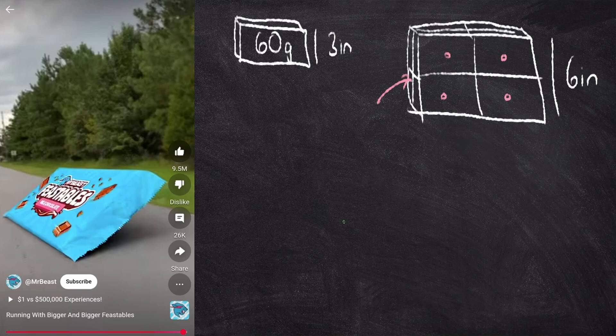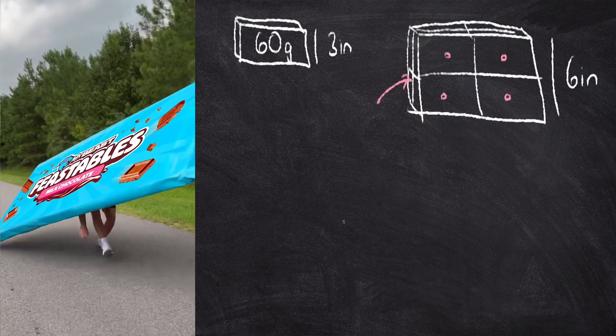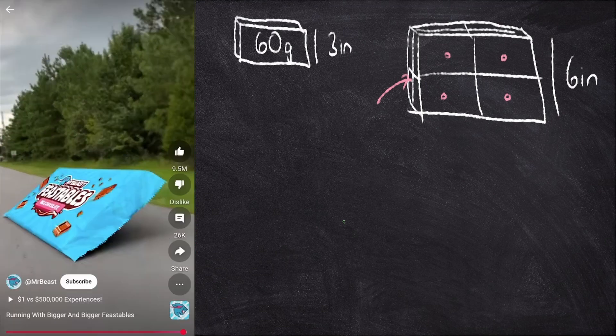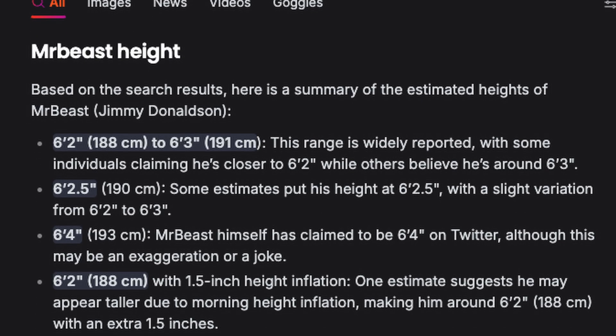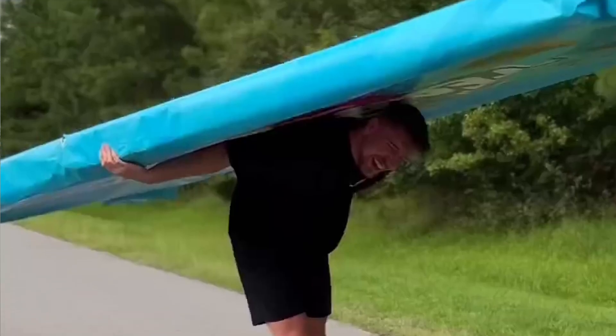And in the final part of this short, Mr. Beast is carrying a chocolate bar which is roughly the width of his wingspan. Mr. Beast is around six foot three, so we can assume that this chocolate bar is roughly six foot.